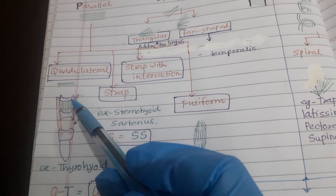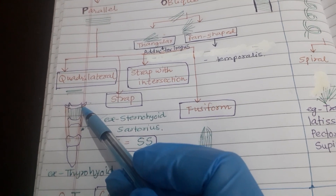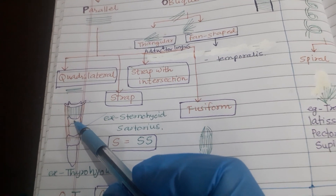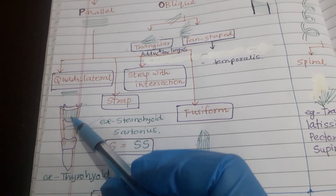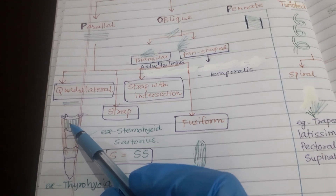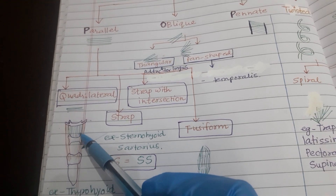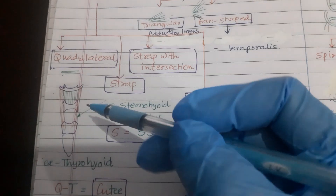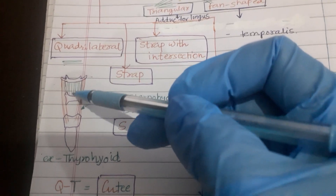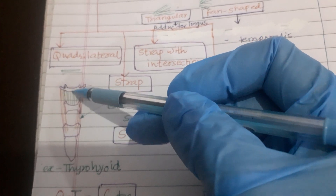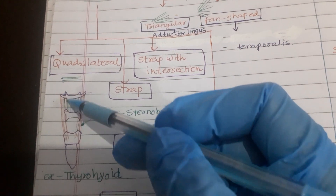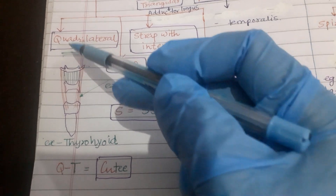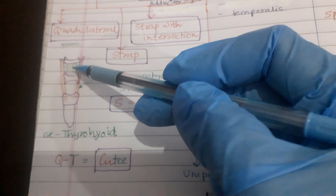The example of quadrilateral is thyrohyoid — in between the thyroid cartilage and the hyoid bone, this is the thyrohyoid muscle, and its architecture is quadrilateral parallel variety. We can see this muscle has parallel architecture and is quadrilateral in shape. Q and T — QT — so it is very cute. This is how we can memorize it.